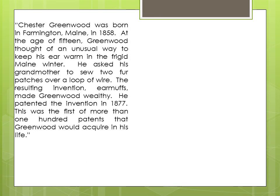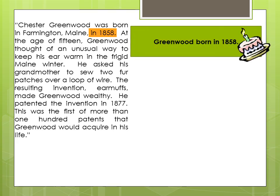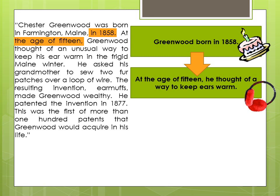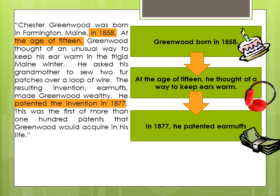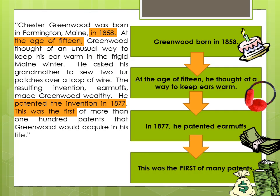Let's look at the passage again, and this time, try to join me as I find the clues and other dates that help us organize our map to sequence the events. The first date I see is in 1858, which tells me that Greenwood was born in 1858. This was probably a very important event, at least to Greenwood, since it was his birthday. The next clue I see is the age of 15. This tells me 15 years after 1858, or 1873, Greenwood found a way to keep his ears warm — the earmuffs. The next clue I see is that he patented the invention in 1877, making him wealthy. And the final clue I see is that this was the first of more than 100 patents that Greenwood acquired in his life. The clue 'first' tells me that there are more events outside of this passage.